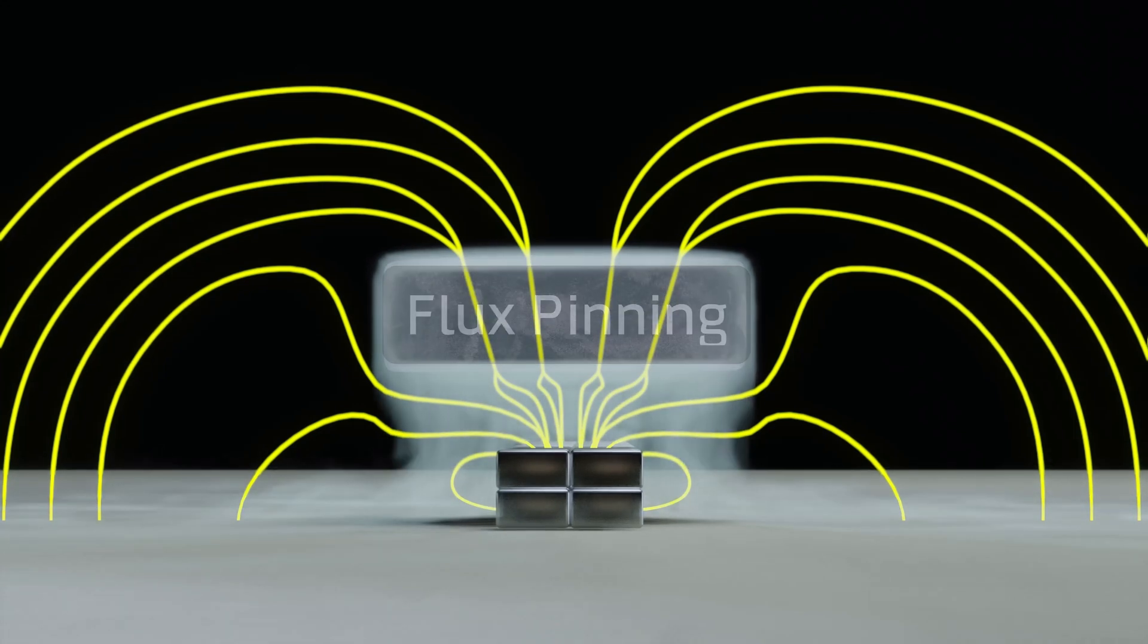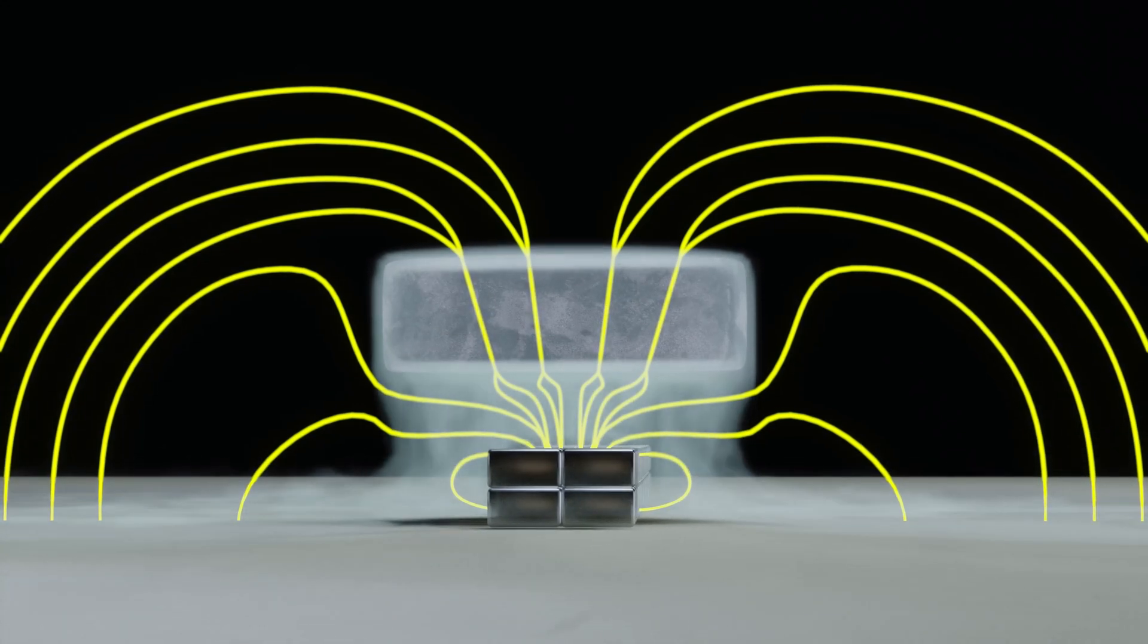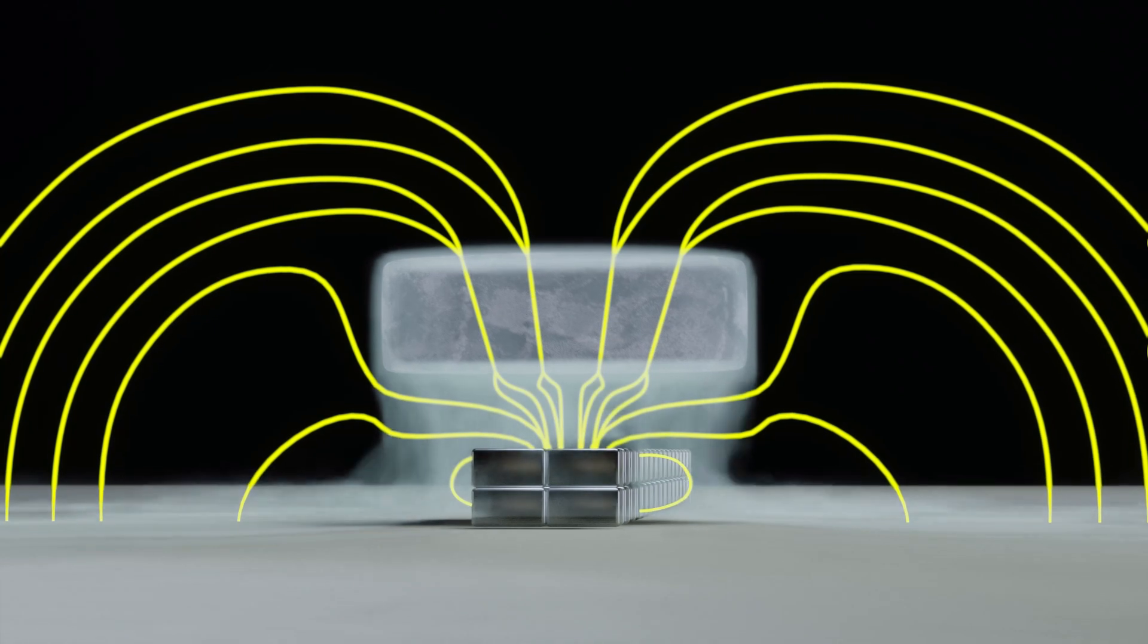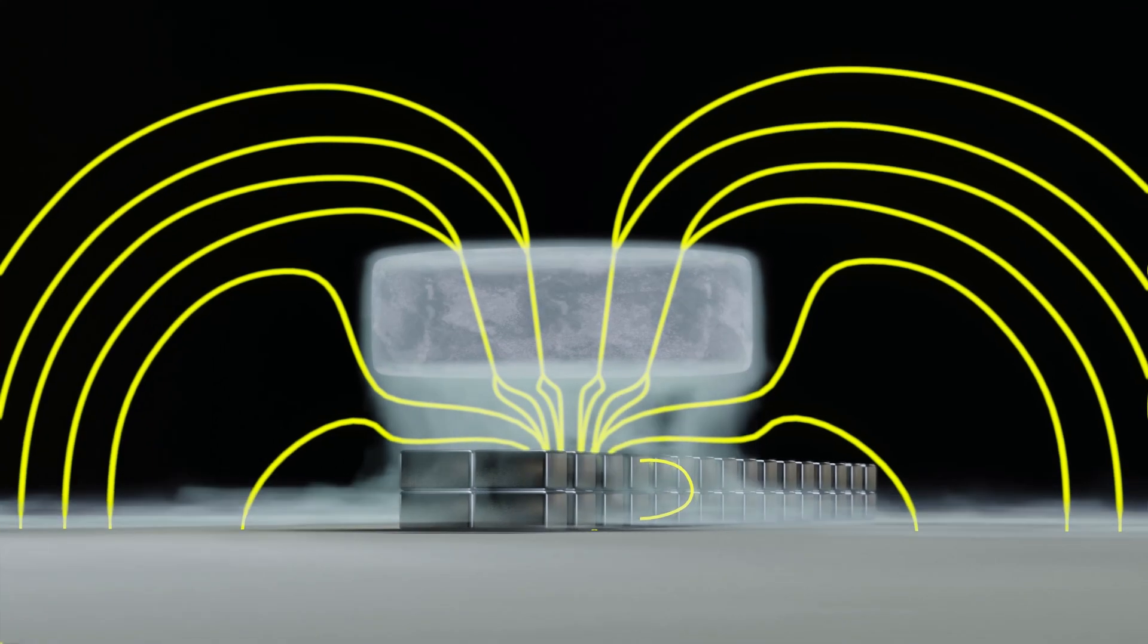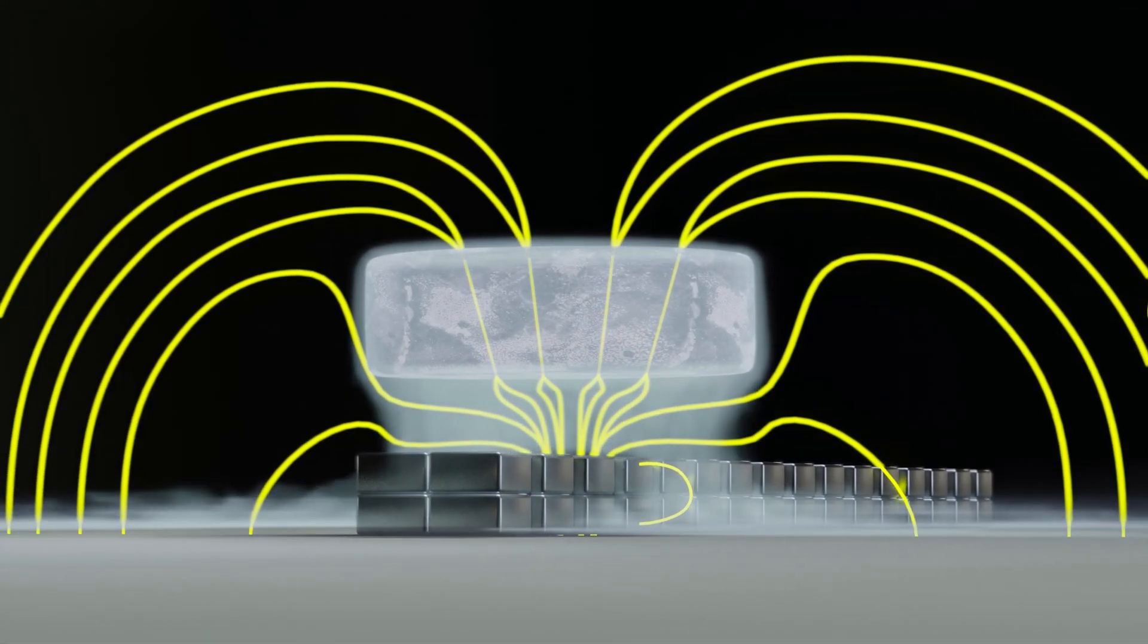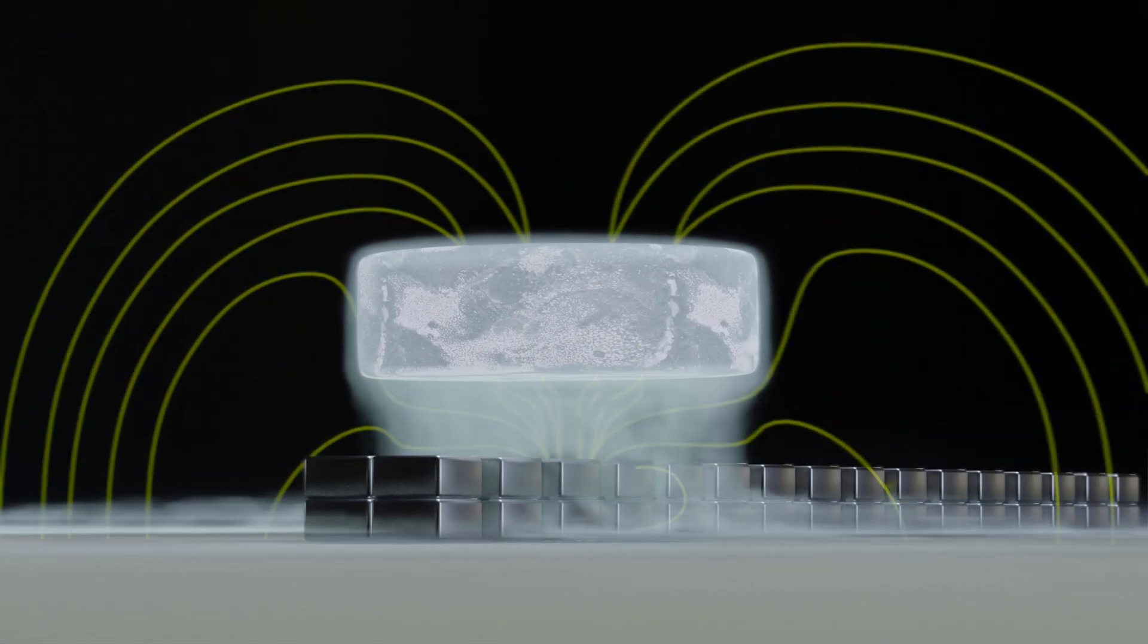Here, the magnetic flux that manages to pass through the superconductor is concentrated in small tubes where the Meissner effect is cancelled out. However, since the rest of the material continues to repel any magnetic flux, these tubes are trapped inside, without being able to change.